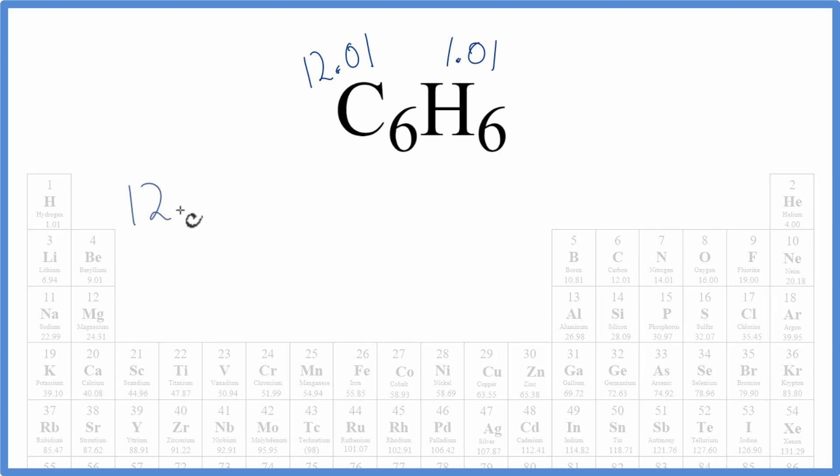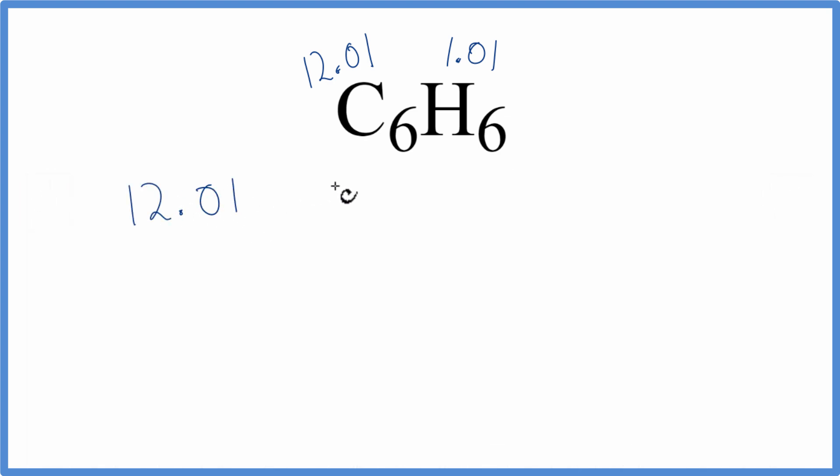So we have 12.01, but we have 6 carbons. So we'll multiply that by 6 plus 1.01 and we have 6 hydrogens.